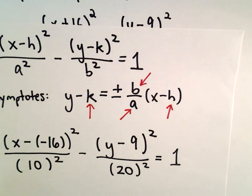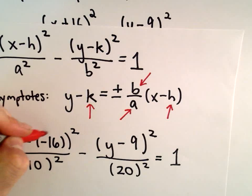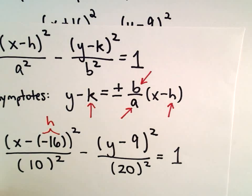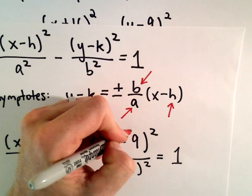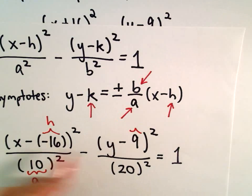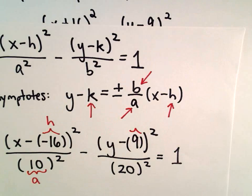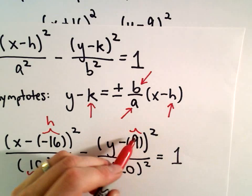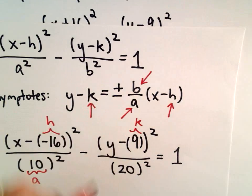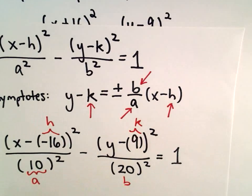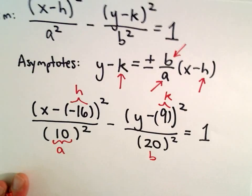So now I've got all my values. This is going to be our value for h, h is going to equal negative 16. 10 is going to be our a value. We could write this as y minus 9, so that's going to be our k value. And 20 is going to be our b value.